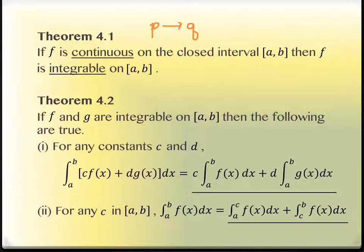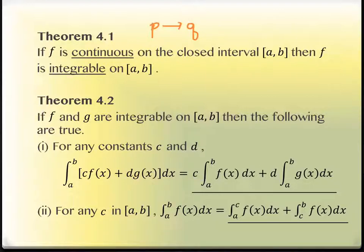Theorem 4.2 says: if you have integrable functions, the following statements automatically apply. The first one: if we have c times f(x) and d times g(x) with this integral notation from a to b, we can separate it just like we did with limits and derivatives. We can pull constant multipliers c and d out in front, and we can separate addition into two separate integrals — just like we separated addition into two separate derivatives.